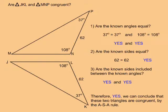In this example, are triangle JKL and triangle MNP congruent? Question 1 says, are the known angles equal? Both triangles have a 37 degree angle and both triangles have a 108 degree angle. So yes, the known angles are equal.